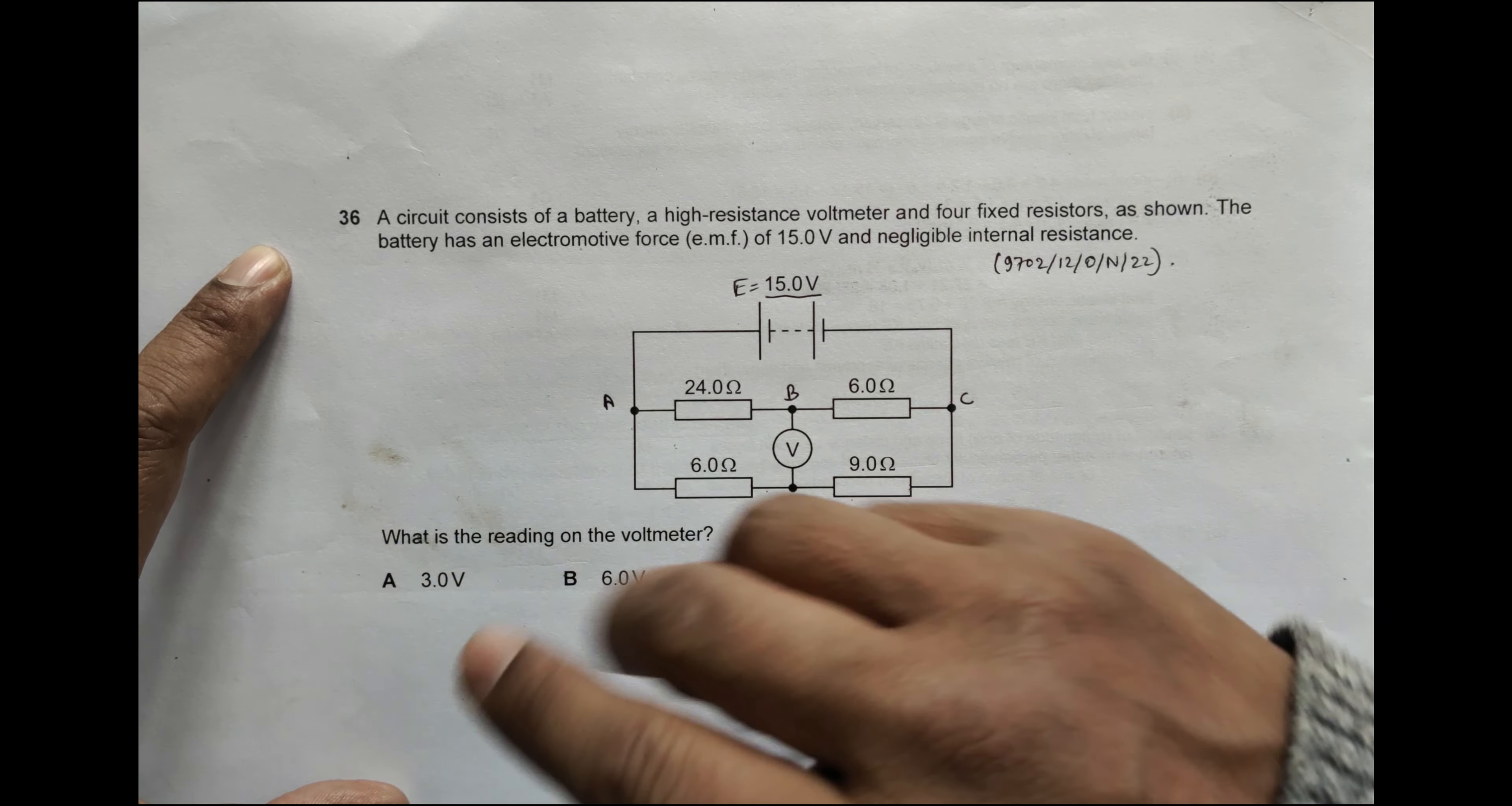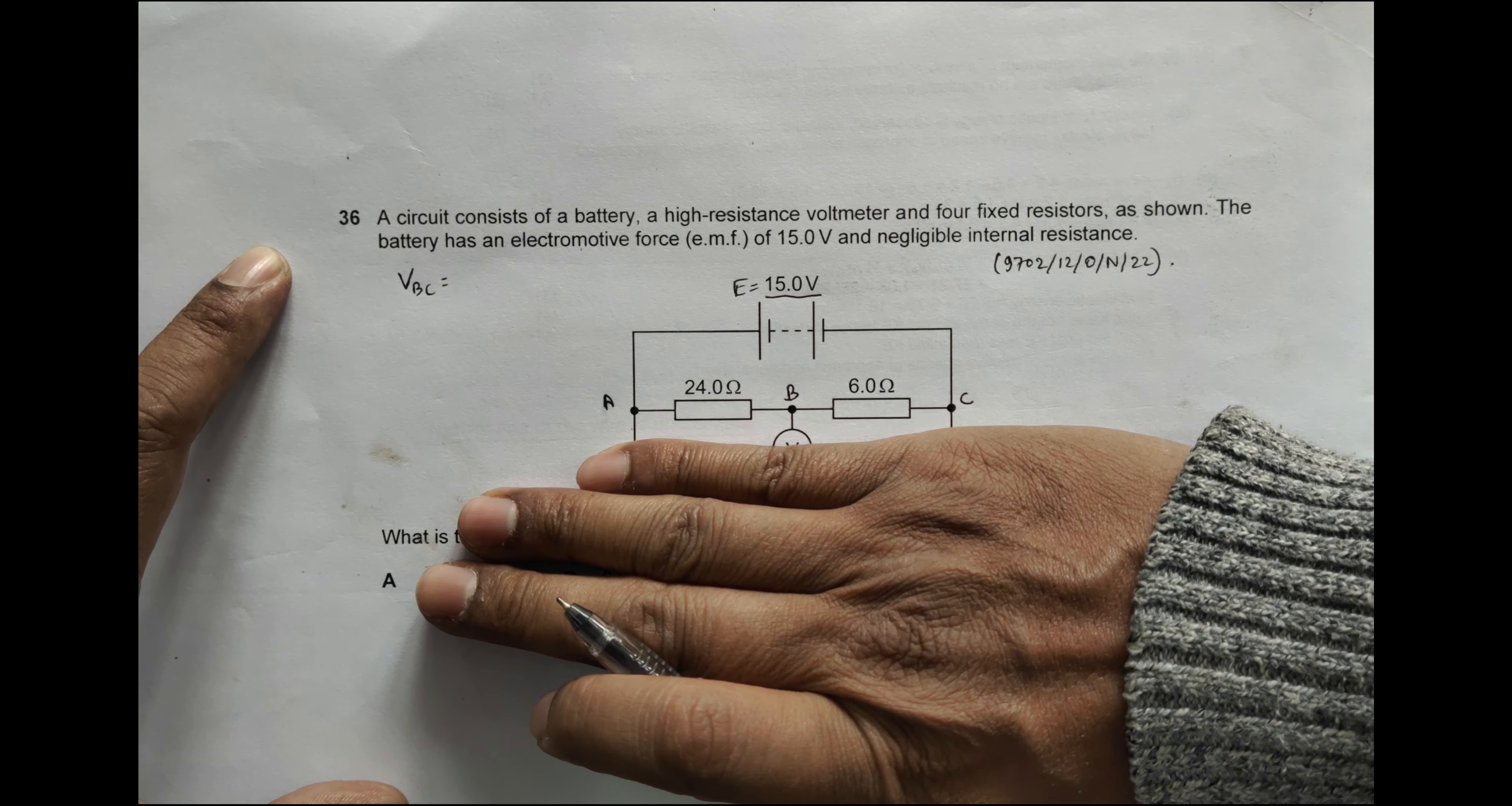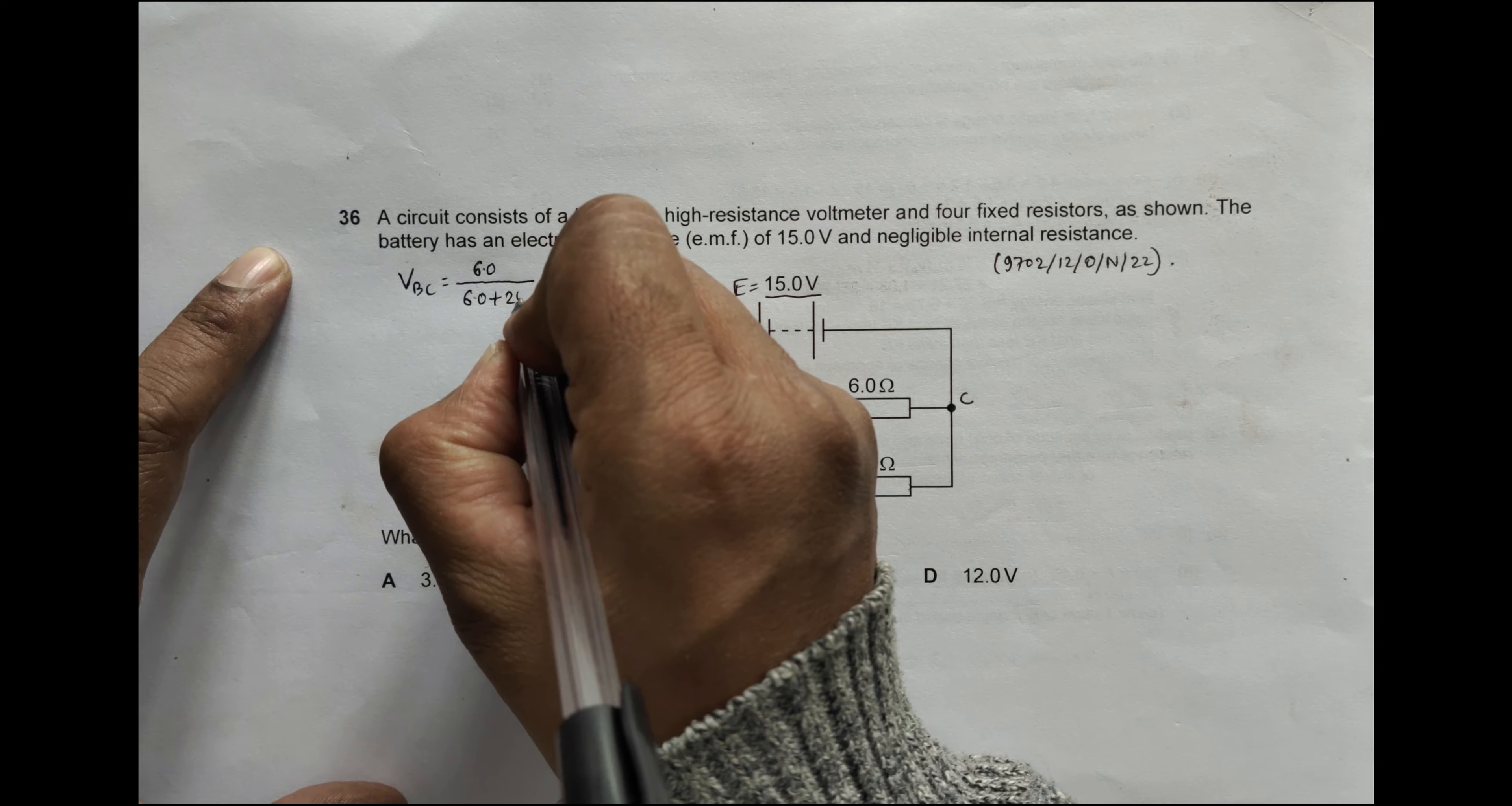So if I consider this section only, this 24 ohm and 6 ohm will act as a voltage divider. That's why for here I should have VBC equal to this resistance which is 6.0 divided by 6.0 plus 24.0 into 15.0.